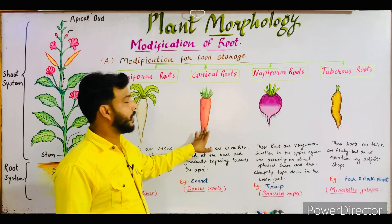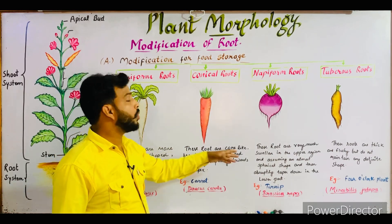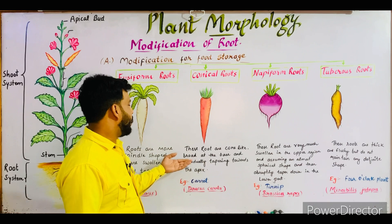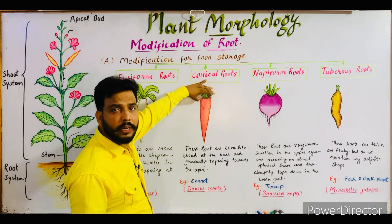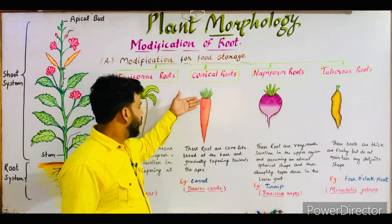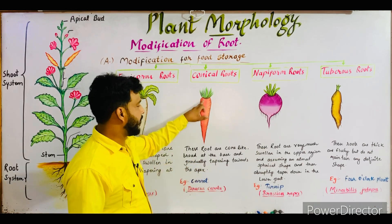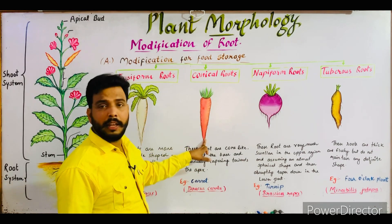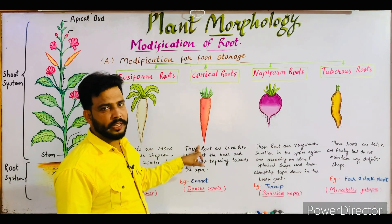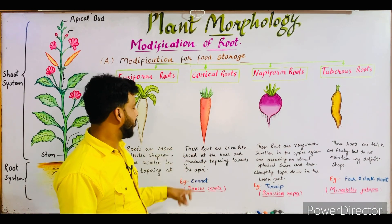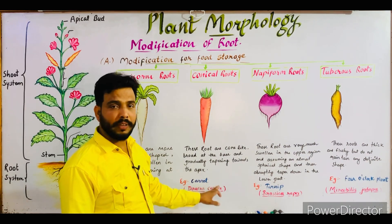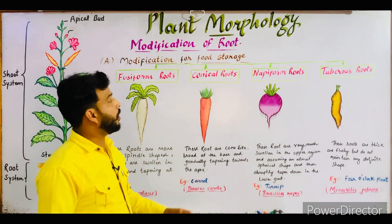Conical roots appear like a cone shape structure — broad at the base and gradually tapering towards the apex. As you can see in the diagram, it is broad at the base and slowly tapering towards the apex. The example of this root is carrot, botanical name Daucus carota.